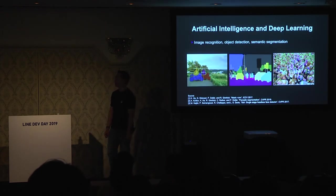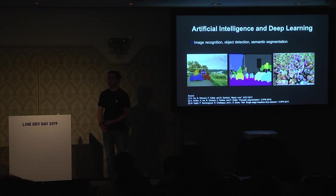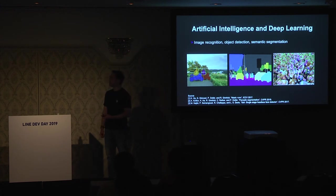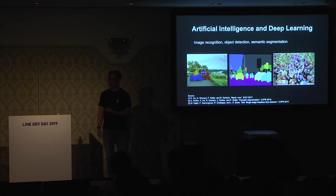These days, artificial intelligence and deep learning have rapidly developed and solved many computer vision problems. For example, image recognition, object detection, and semantic segmentation are now common problems, and their performance seems great.